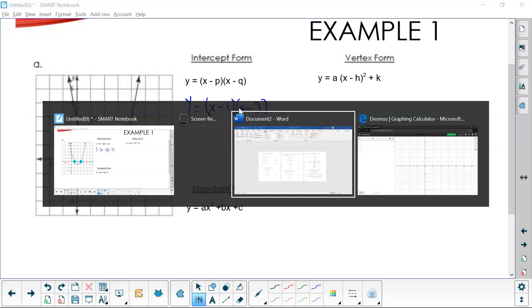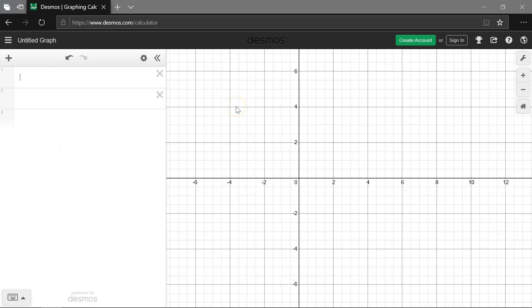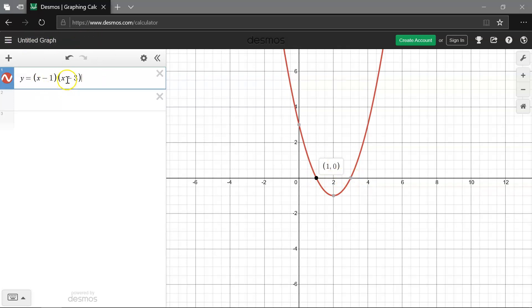That is the intercept form for this equation, y = (x - 1)(x - 3). Let's go over to Desmos and put that in. And we have a nice red parabola, and we can see right here is our value (1, 0). And here is our other value (3, 0), which matches up nicely to what we have on the other page.